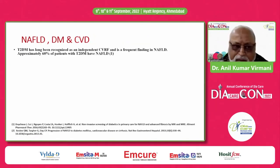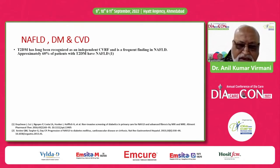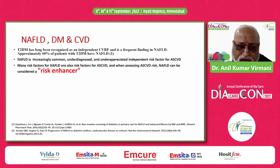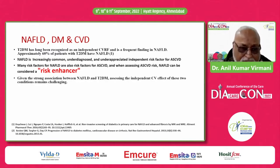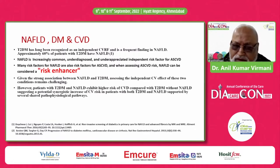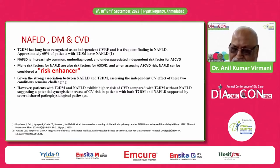When you look at all three together: type 2 diabetes has long been recognized as an independent cardiovascular risk factor and is a frequent finding in fatty liver disease. 60% of patients with type 2 diabetes have fatty liver disease, and this is increasingly common, underdiagnosed, and underappreciated as an independent risk factor for atherosclerotic cardiovascular disease. The presence of NAFLD is basically a risk enhancer. Given the strong association between fatty liver and type 2 diabetes, assessing the independent cardiovascular effect of these two conditions remains challenging. However, patients with type 2 diabetes and fatty liver exhibit higher risk of cardiovascular disease compared to those diabetic patients without fatty liver, suggesting a potential synergistic increase of cardiovascular risk.